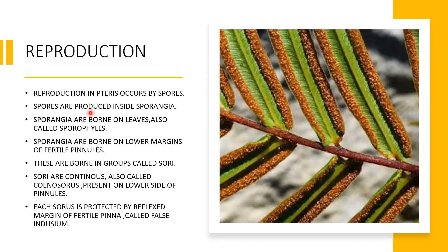Spores are produced inside the sporangium. Sporangia are borne on the leaves, which are called sporophylls. Sporangia are present on the lower side of the pinna, in groups called sorus or sori — sorus is the singular word and sori is the plural word. Because they are continuous, this is called a coenosorus. Each sorus is protected by the reflexed margin of the fertile pinna, which is called a false indusium. This we will study in the next slide.